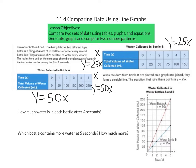We're now going to use our graph to answer some questions. The first question is how much water is in each bottle after four seconds. We're going to take a look at our X axis and find four seconds and see where four seconds lines up with each graph. For water bottle A, four seconds lines up with 200 mL.